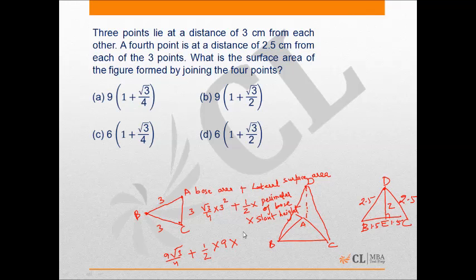So my lateral surface area would be let us multiply now with the slant height that is 2. So 9 plus 9 root 3 by 4 would be the correct answer. And which is if I look over here, option number A.